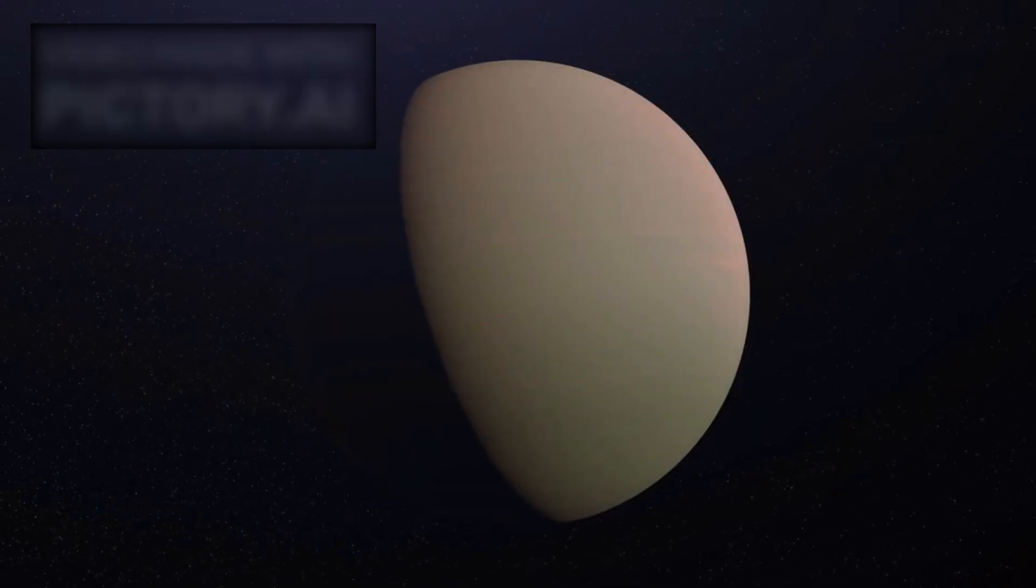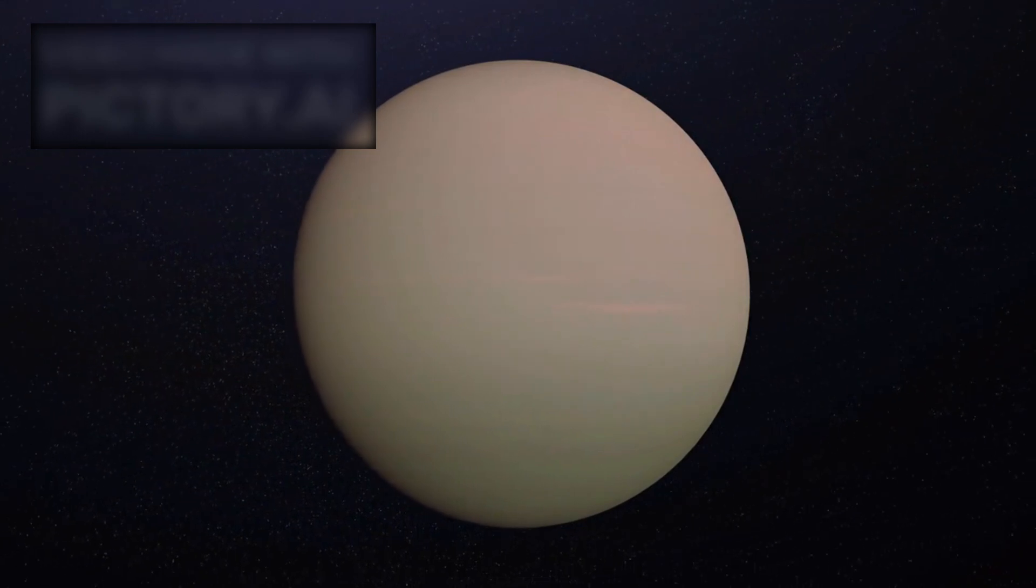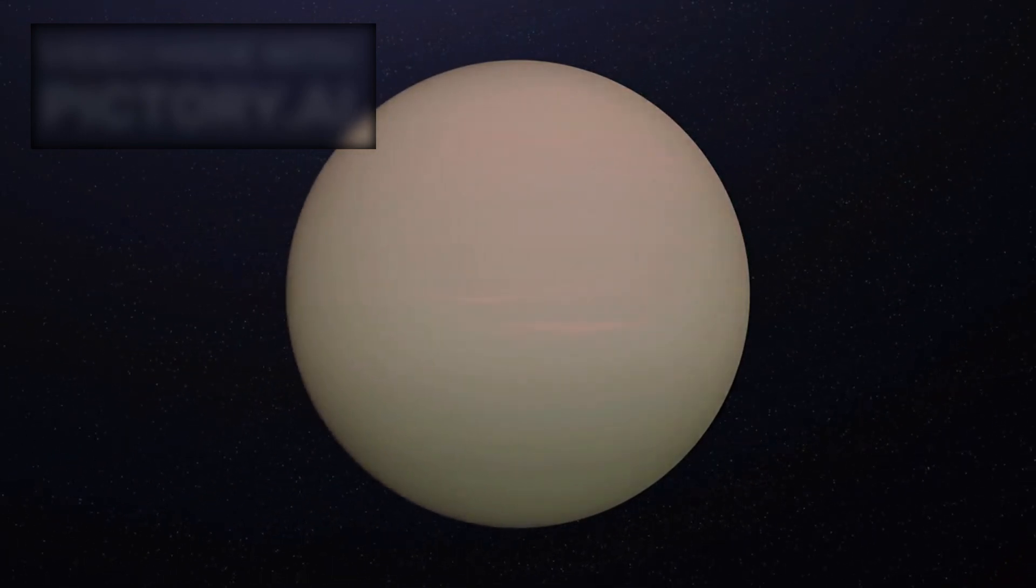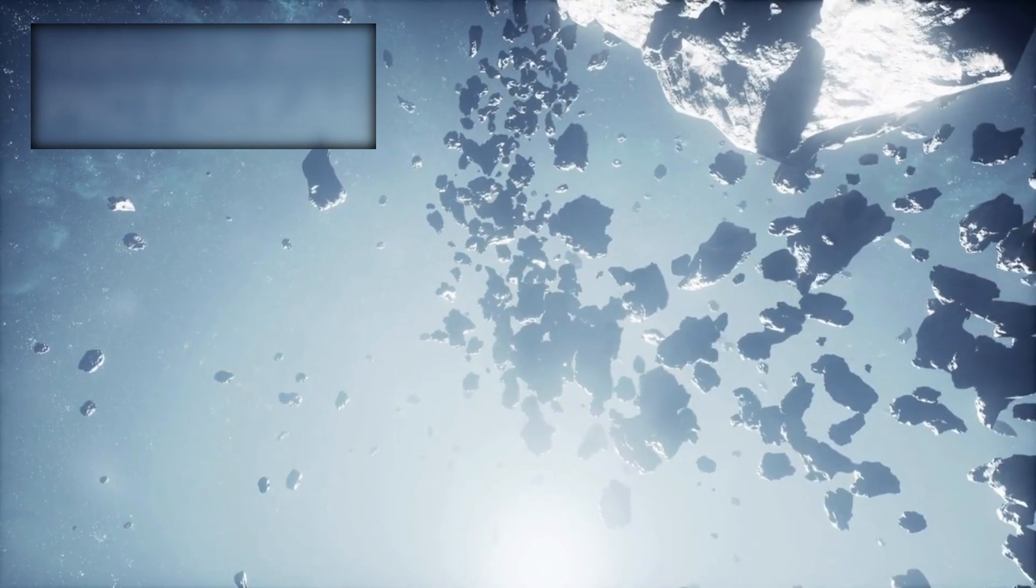Among the many objects in the Kuiper belt, a vast region filled with icy remnants from the solar system's formation, Pluto stands out. Most Kuiper belt objects are cold, inert, and relatively inactive.